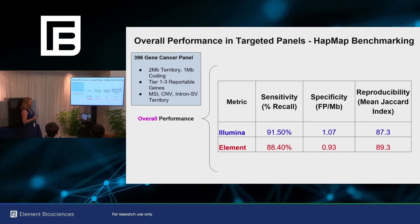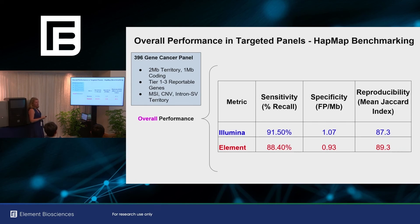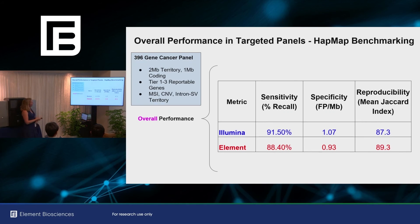Overall, Illumina had slightly higher sensitivity and slightly lower specificity, while Element had slightly lower false positives. I don't think the difference is very meaningful — this is just one test. The mutation calling pipeline we run is MUTECT2, which was developed during the days of Illumina sequencing and has not been optimized for Element at all. On the first pass without any optimization for Element data — which we know we should do — we have really comparable results.